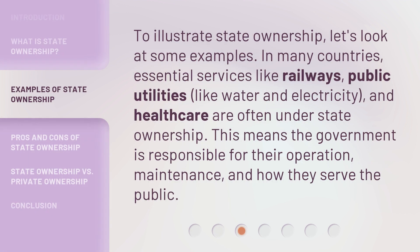To illustrate state ownership, let's look at some examples. In many countries, essential services like railways, public utilities like water and electricity, and healthcare are often under state ownership. This means the government is responsible for their operation, maintenance, and how they serve the public.